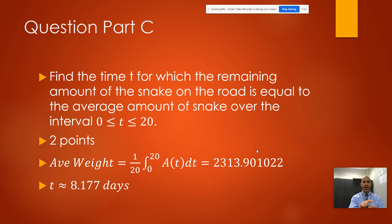We want to figure out when the actual weight is equal to the average rate. What I would do is simply draw the line with my graphing calculator for y equals 2313.901 and see where it intersects the A(t) function. It turns out it intersects at 8.177 days.